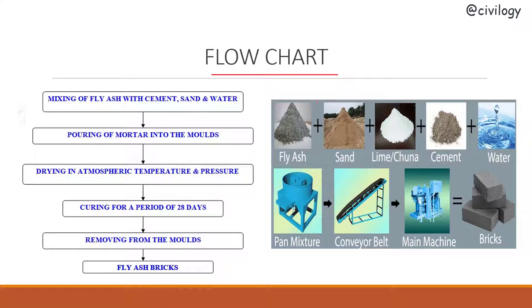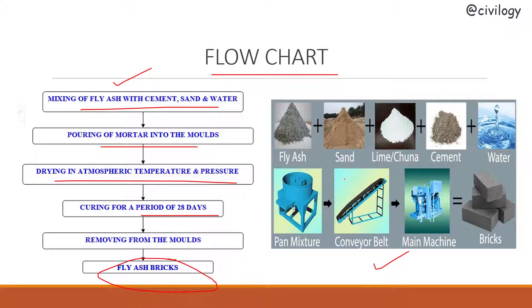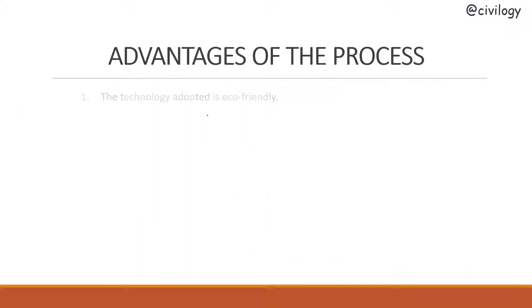Now we'll understand the process through a flowchart. In the manual method: fly ash, cement, sand, and water are mixed, poured into molds, dried at atmospheric temperature and pressure, and cured for at least 28 days before removing from molds. In the machine method: ingredients are mixed in a pan mixer, passed through a conveyor belt, poured into the machine, which automatically presses the bricks, and the bricks are then kept for curing.